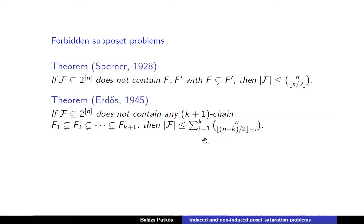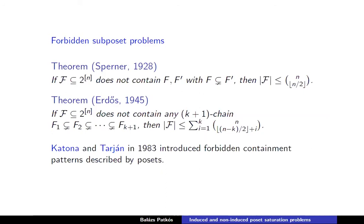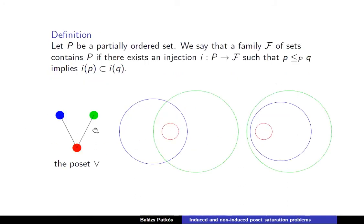There are lots of applications and generalizations of these theorems. One generalization is due to Katona and Tarján from the early 1980s. They viewed Sperner's and Erdős's results as forbidding containment patterns described by posets. Sperner's theorem forbids any containment, and Erdős's theorem forbids a chain of length k+1. These forbidden containment patterns are described by posets: a non-induced copy requires containment exactly when there is a relation in the poset, while an induced copy requires containment only when there is a relation.